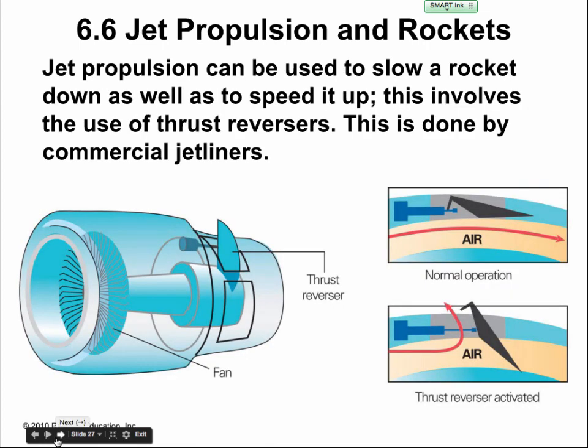You can use that same principle in airplanes with thrusters. A reverse thruster redirects the air, and that's how jets slow down — air brakes or reverse thrust. Because momentum is a vector, if you force the air to go in one direction, the plane must slow down in the other direction. It's the same concept, just backwards.